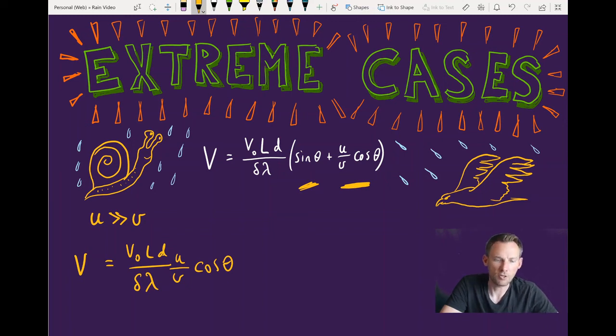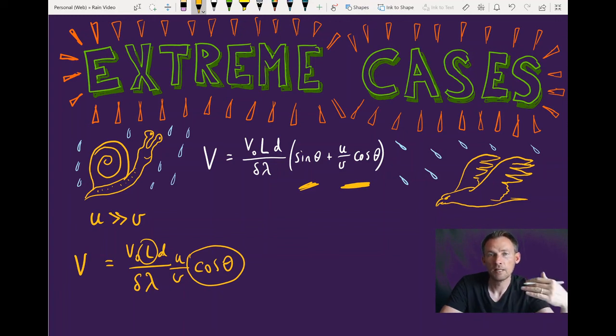The interesting thing to note here is the combination of L times cosine theta is how much length you would see if you were looking down on the board. So it's basically how much of that board is exposed to the rain. And that's really important in this case, because we're hardly moving horizontally. So the main impact is from vertically above.